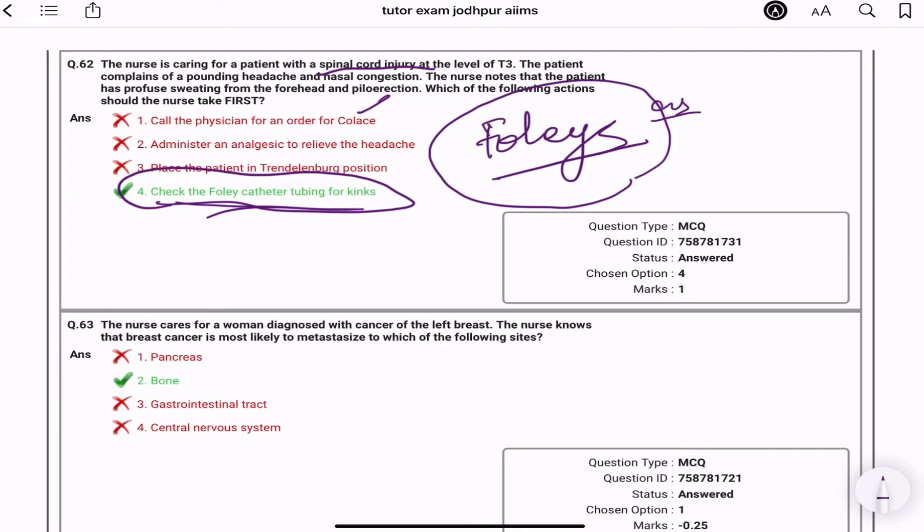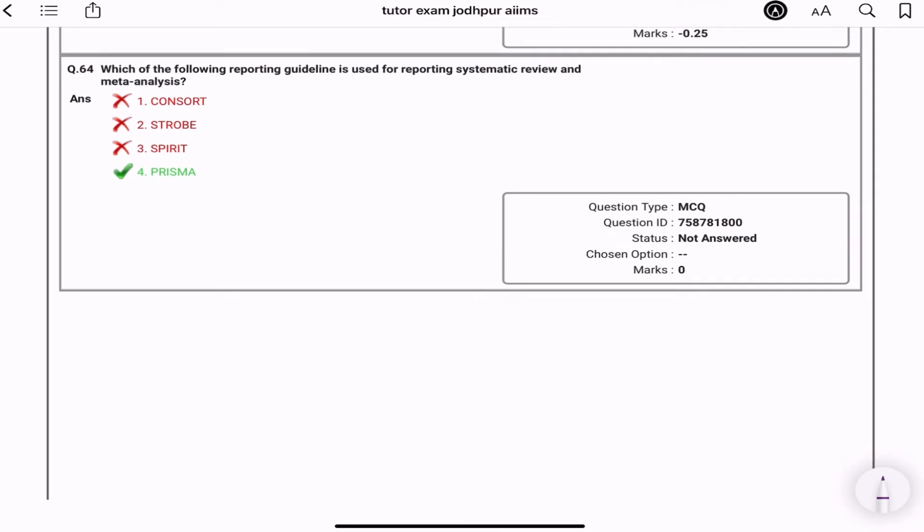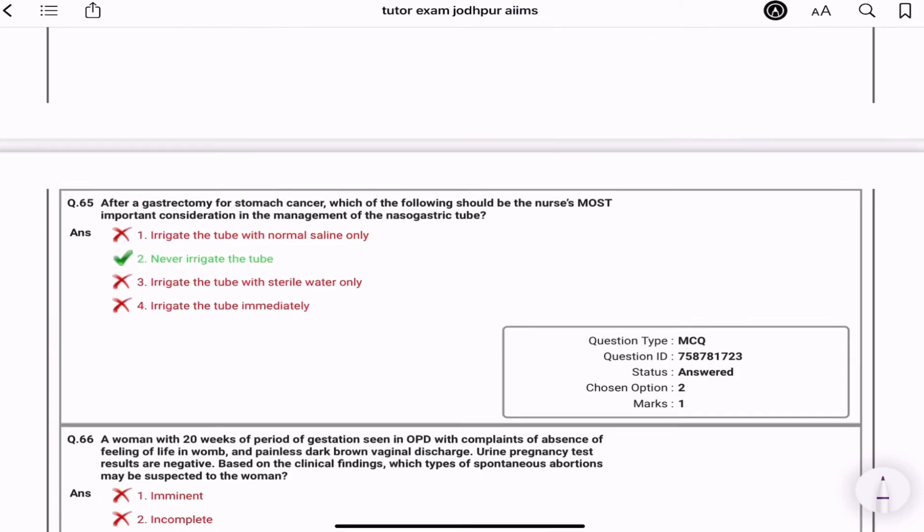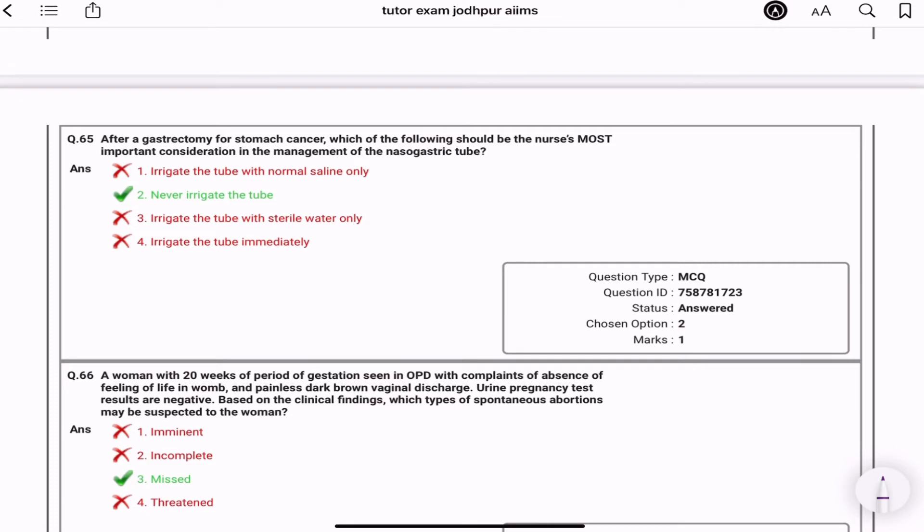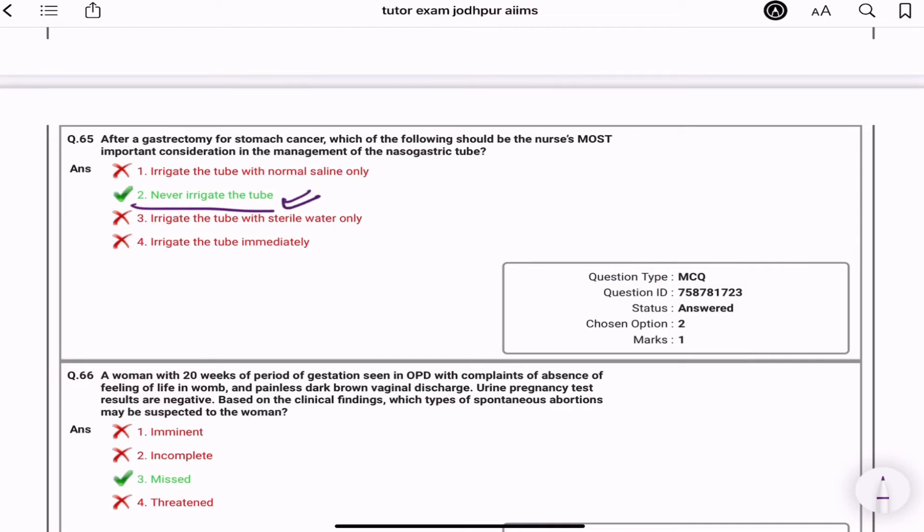For a woman diagnosed with the cancer of the left breast, the nurse knows the breast cancer is most likely to metastasize to which of the following sites? Bone. Which of the following reporting guidance is used for reporting systematic review and meta-analysis? PRISMA. After the gastrectomy for the stomach cancer, which of the following should be nurse most important consideration for the management of NG tube? Never irrigate the tube until or unless it is under written order. Always get the written order in this scenario.